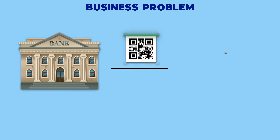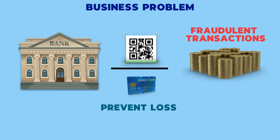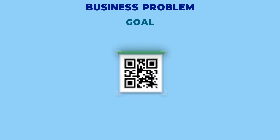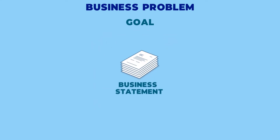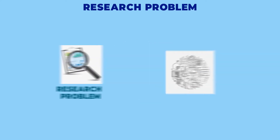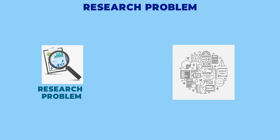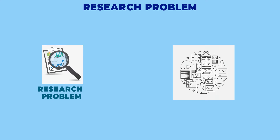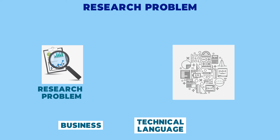Suppose a bank wants to detect fraudulent transactions for credit cards to prevent loss and maintain its credibility and customer satisfaction. Their goal is to detect as much fraud as possible. This business statement cannot be directly given to data scientists expecting them to build a model. It needs to be converted into a research problem that can be translated into a mathematical model — say, creating a model that will detect the maximum number of true positives and minimize false negatives. This is where business data analysts play a key role, as they understand both business and technical languages and can talk to stakeholders to understand all nuances and convert them for the data scientists.